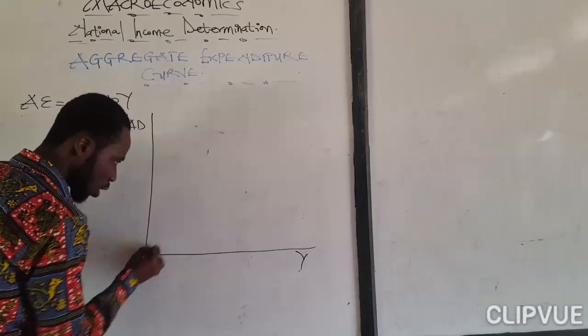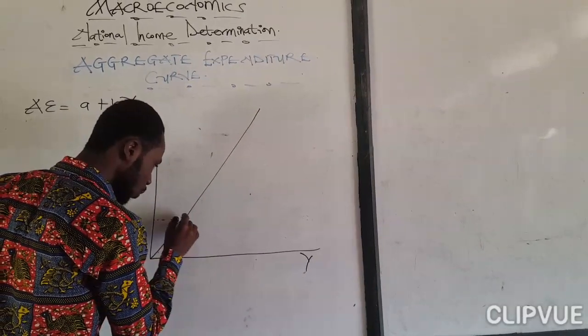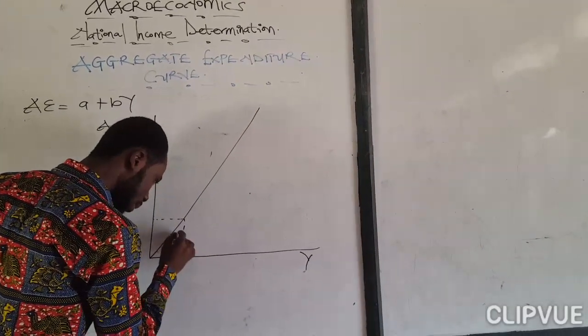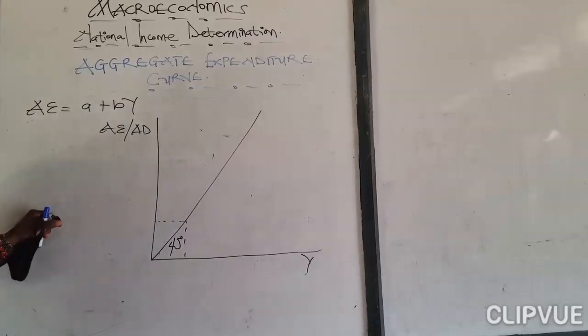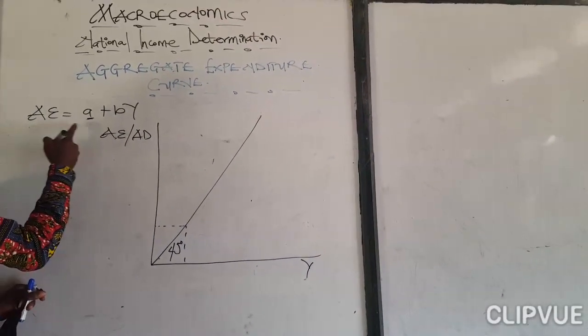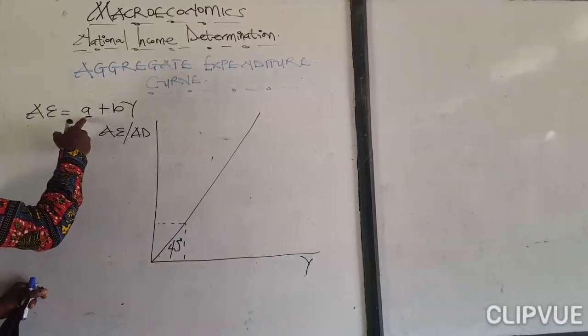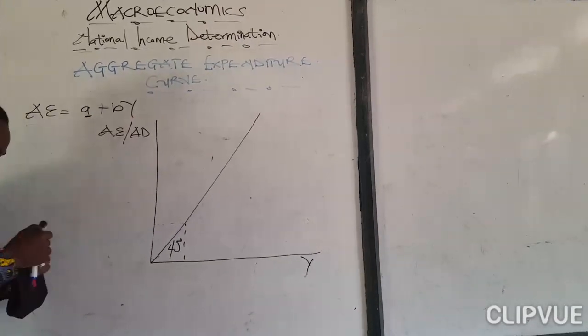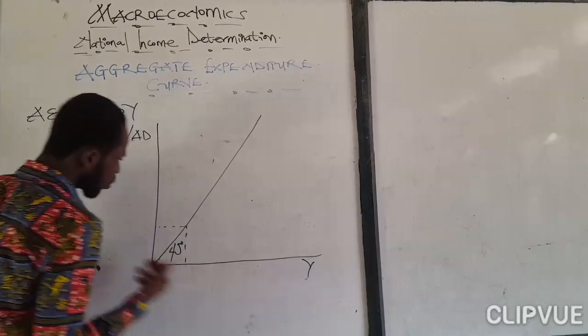We will first draw a 45 degrees line. I've told you. 45 degrees line. After drawing a 45 degrees line, here is what will be spent when our income is equal to zero. So if here is equal to zero...